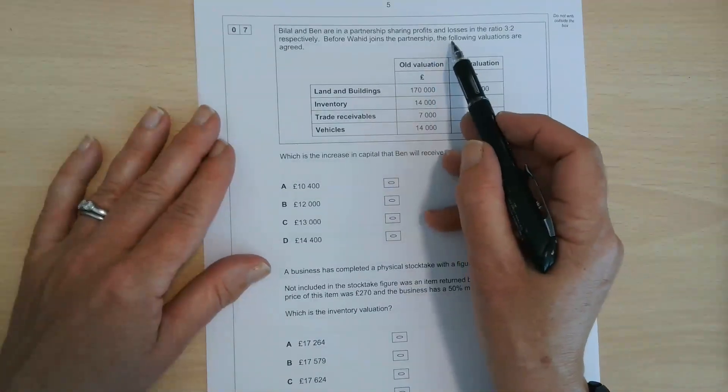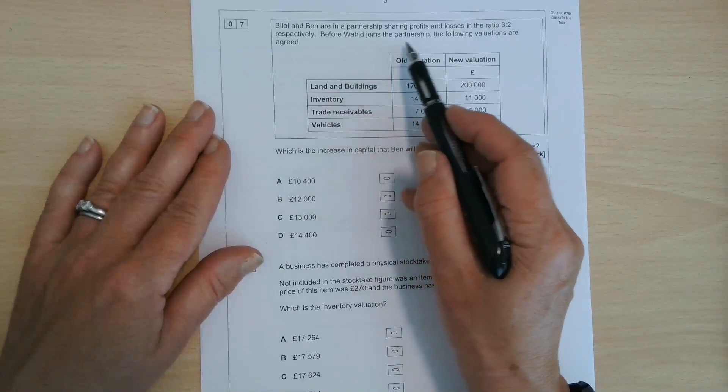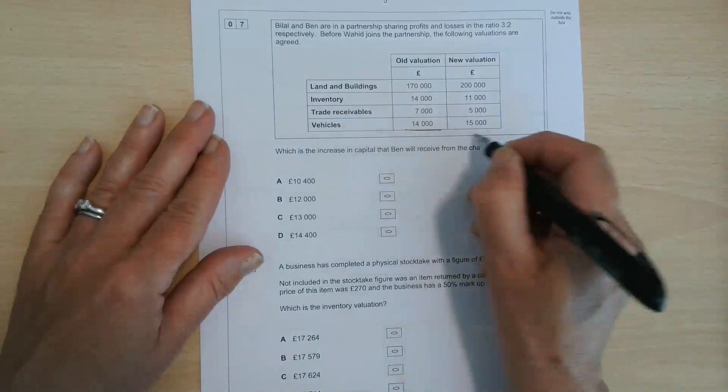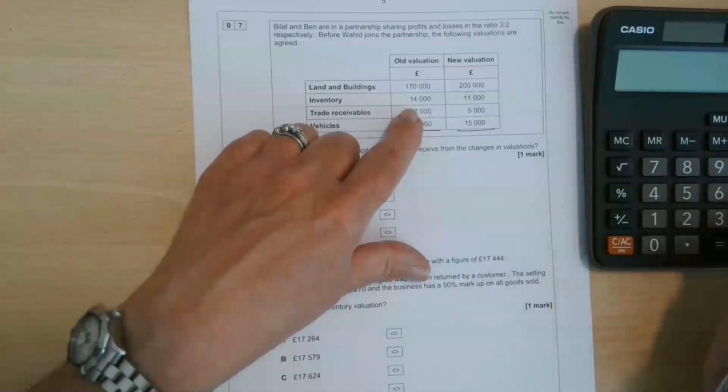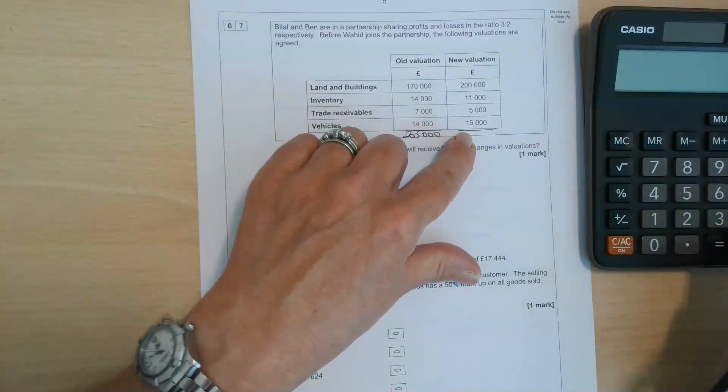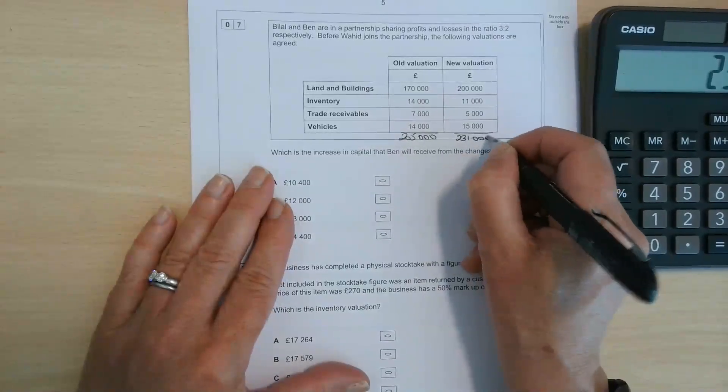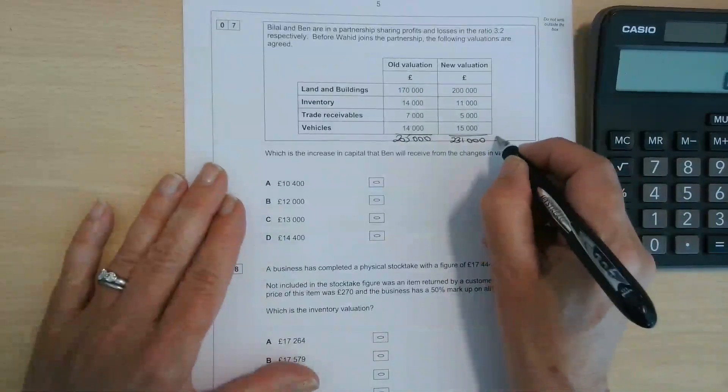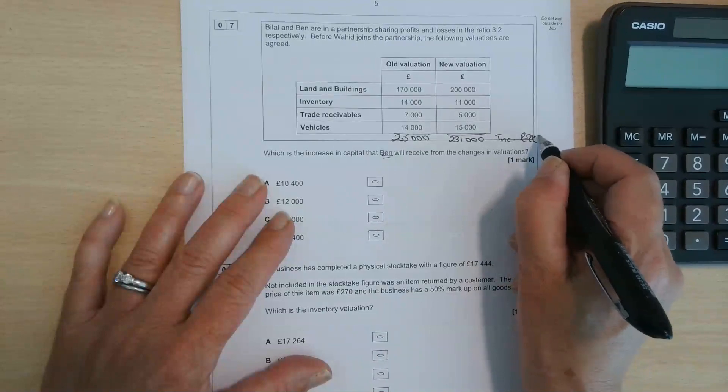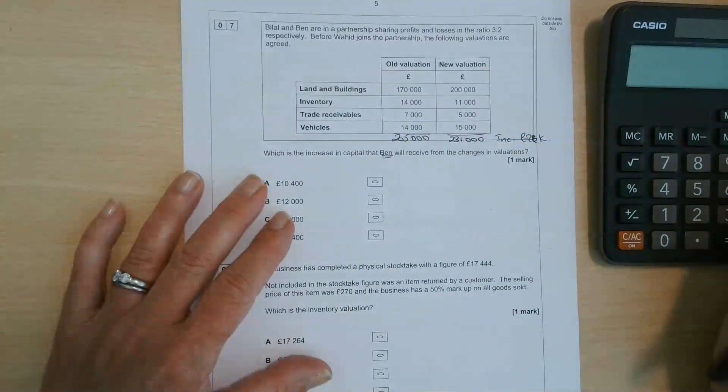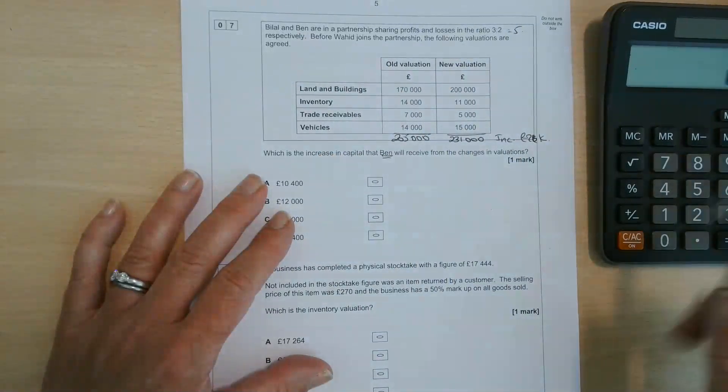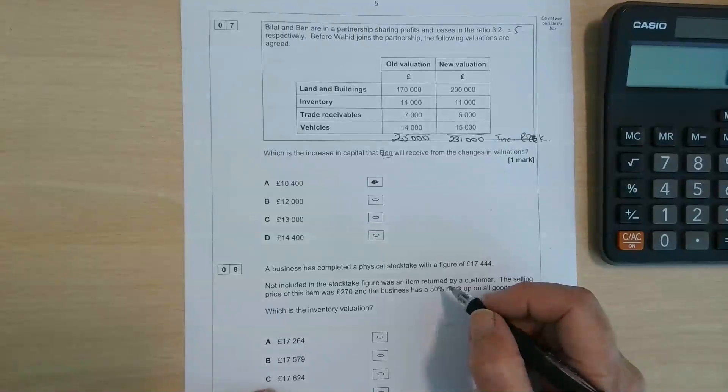Okay, number seven then. Bilal and Ben are in partnership, sharing profits and losses in the ratio of three to two, respectively. Before Waheed joins the partnership, the following valuations are agreed. So we've got old valuations and new valuations. So we've got some assets. That was the original value. I'm going to suggest we just find out what the old value was for these assets. So this is about revaluation when we have a change in the partnership. 200 plus 11 plus 5 plus 15. So 231. So there is an increase in the valuation of 26,000 pounds. Okay, and it's in the ratio of three to two. And we're trying to find out how Ben's going to benefit. So remember that the increase, 26,000 is going to be split in the ratio three to two. So the total of that is five. And we do it in the right order. So Bilal would get three fifths, Ben gets two fifths. So times two over five means that he's going to get 10,400. So the answer for number seven is A.